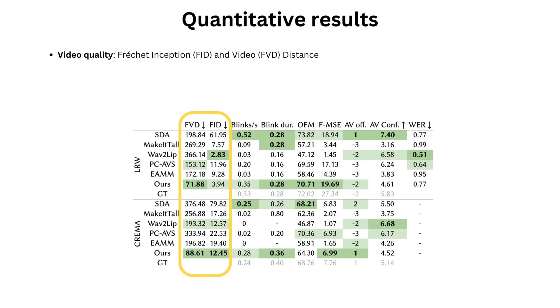We evaluated our approach on two datasets, LRW and CREMA, and compared it with five other methods: SDA, Make-It-Talk, Wav2Lip, PCA-VS, and EAMM. To measure video quality, we opted for FID and FVD.